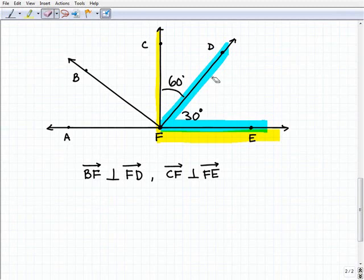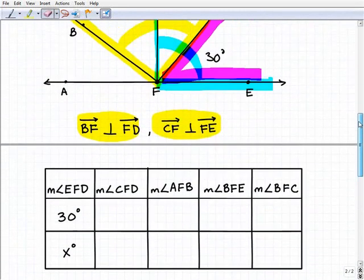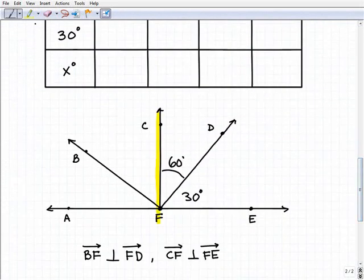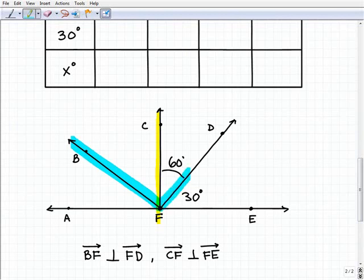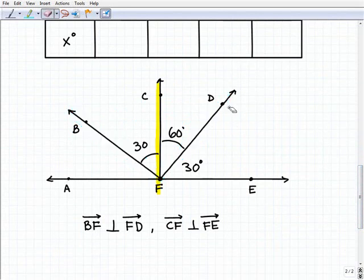We're going to use the same technique here. We have another pair of perpendicular angles, BF and FD rays. These two rays right here are perpendicular, so this total angle sum is 90 degrees. So this angle right here has got to be 30 degrees, because 30 plus 60 forms a total angle of 90 degrees. Once again, they're complementary.